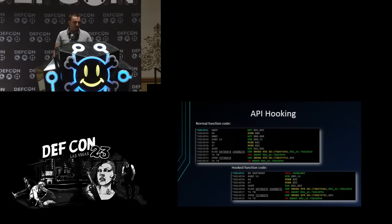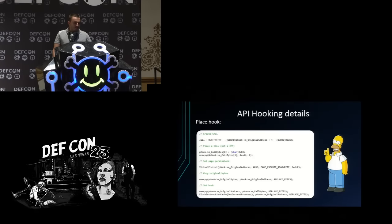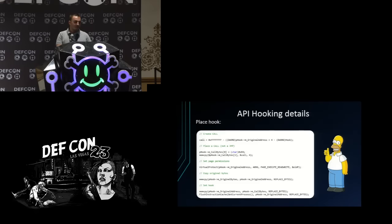This is the normal assembly for a function — it starts with MOV EDI and the classic function prolog: PUSH EBP, MOV EBP ESP. After we hook this function, the first five bytes are replaced by our call instruction and the specific address, which is the address of our generic hooking function. To place the hook, we create a call instruction — the opcode for call is 0xE8 — and we calculate the distance between the original function and our hooking callback function, saving the original bytes in order to restore them later. FlushInstructionCache is included but may not be strictly required on Windows.